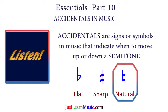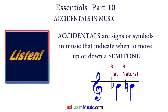A natural symbol is used to cancel any accidental that was previously present. For example, if you are playing a B flat note and immediately you need to play the B natural note, all you need to do is place the natural symbol before that B note, and you know that you need to play B natural, or move up by one semitone.